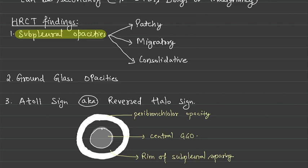Why do these opacities occur? Because of consolidation. Remember, there are two features of consolidation: they are patchy and they are migratory. For example, in one CT you will find that the opacities are near the hilum, and after one week if you repeat the CT, you will find that it is in the peripheral zone, more lateral. In the next CT you will find it somewhere else.